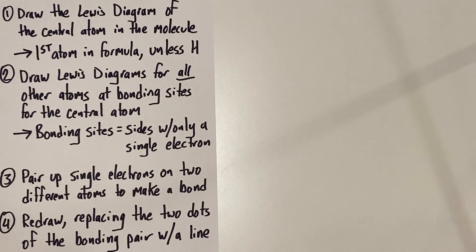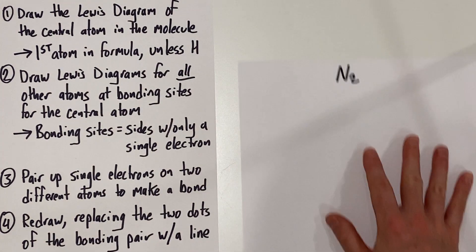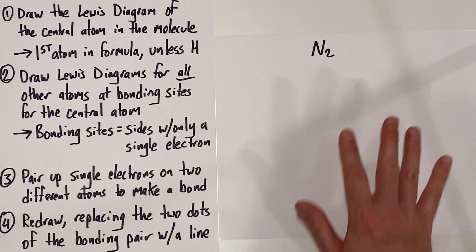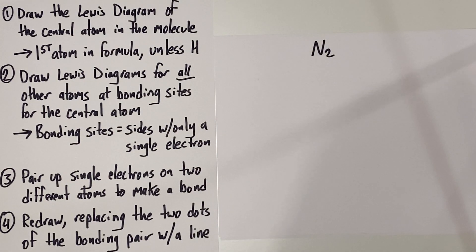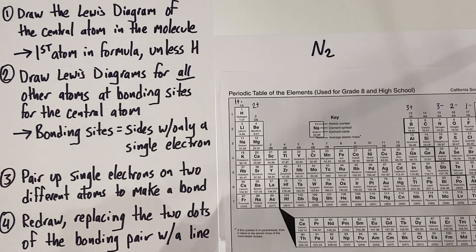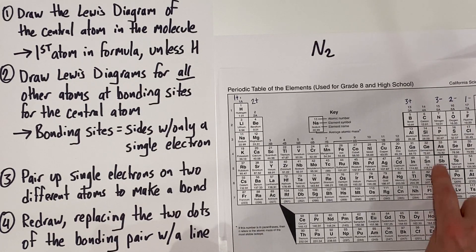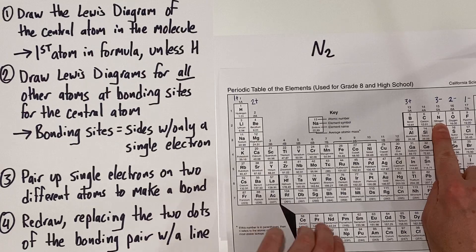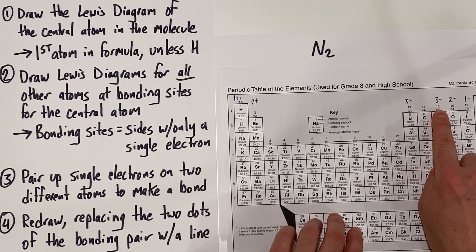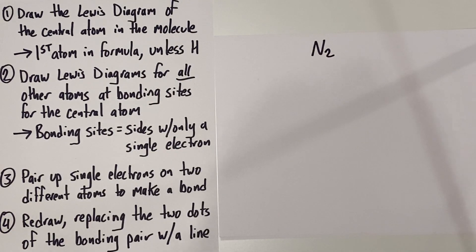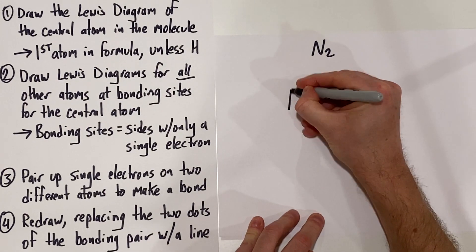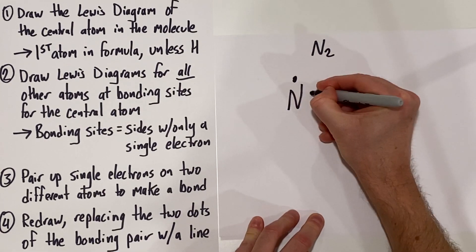Let's start with the molecule N2, which is nitrogen. Just like before, we want to draw the Lewis diagram for the central atom in the molecule. If you only have two atoms in the molecule, you're not really going to have a central atom, but we still have to pick one to draw first. We'll draw one nitrogen atom first. We have to find nitrogen on the periodic table — it has five valence electrons because it's in group 15. So we'll draw a nitrogen atom with five valence electrons.